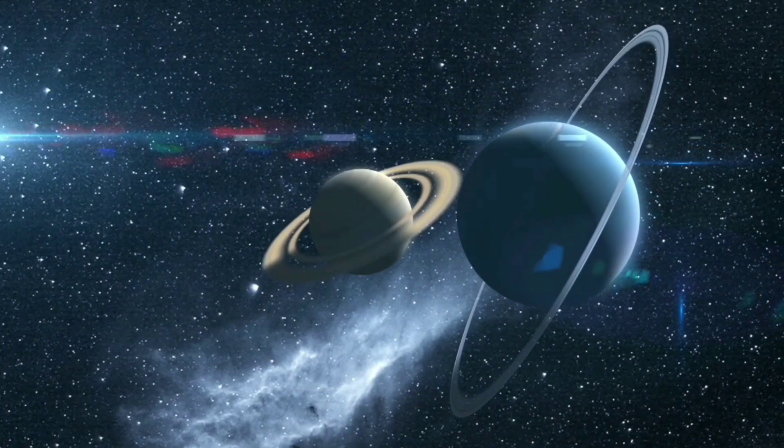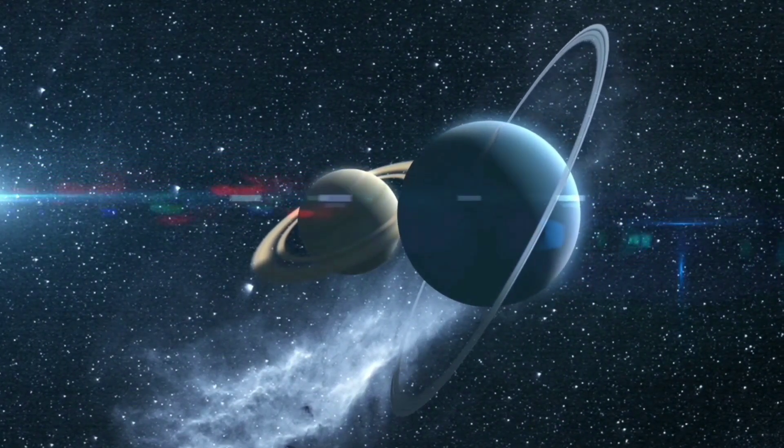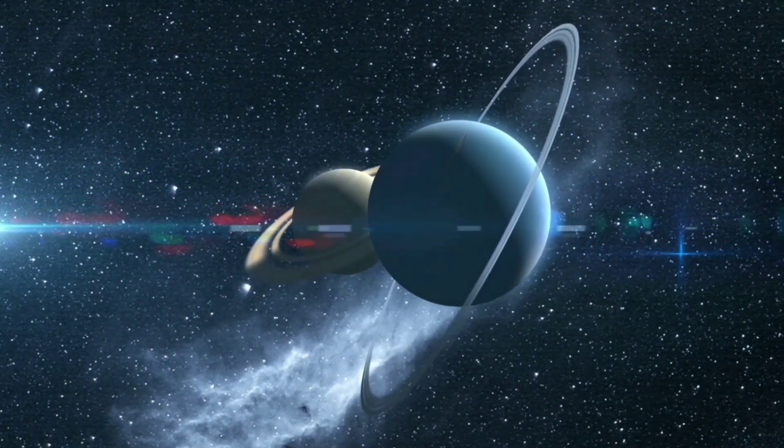This gives the planet a unique greenish hue, and this is the reason why it is called the green planet of the solar system.